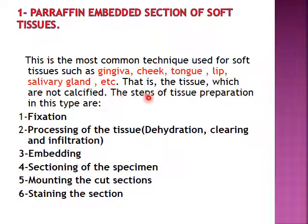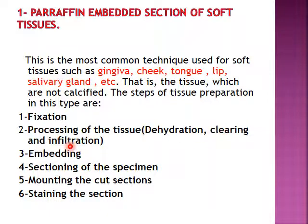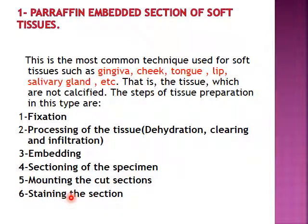The steps for the preparation of paraffin embedding section include: first, fixation of the soft tissue; second, processing of tissue by dehydration, clearing, and infiltration; third, embedding; fourth, sectioning of the specimen by microtome; fifth, mounting of the cut section on the slides; and the final step is staining of the section.